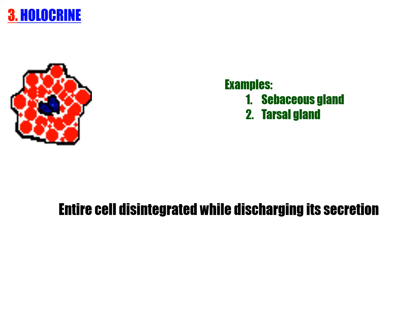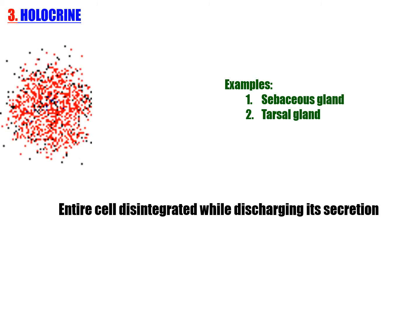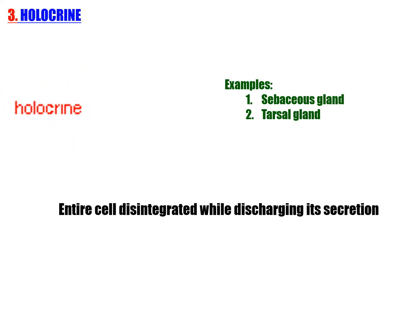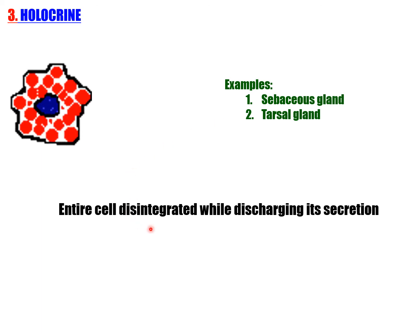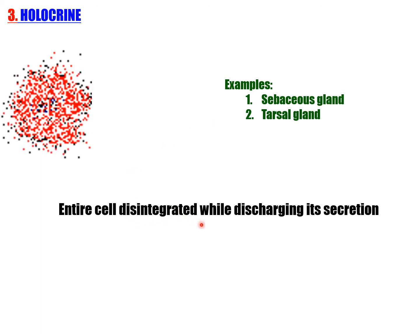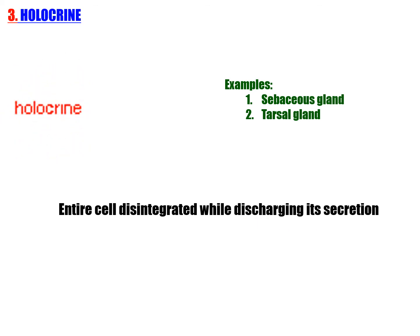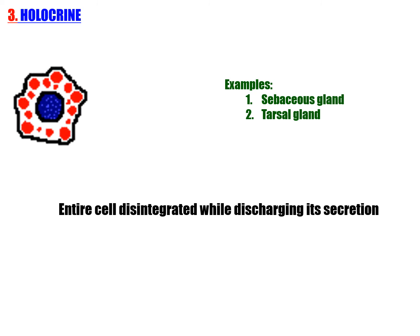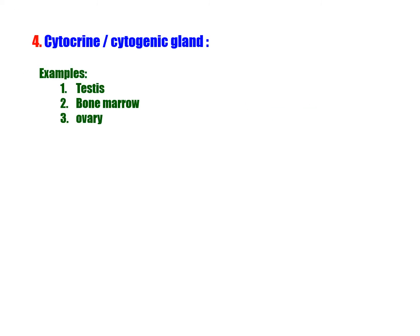Holocrine gland: as the secretory cells mature, they die and become the secretory product. The entire cell disintegrates while discharging its secretion. Examples: sebaceous gland and tarsal gland. Cytocrine or cytogenic gland: in the testis, cells are released as the secretion — this mode of secretion is called cytocrine.